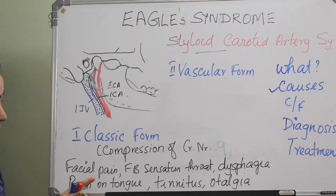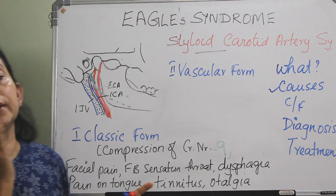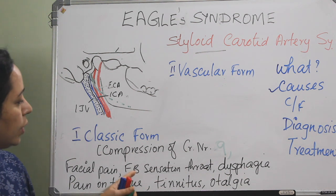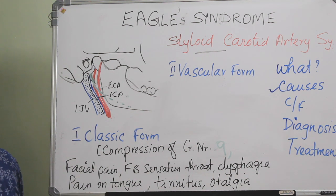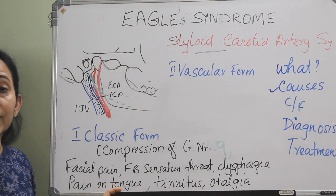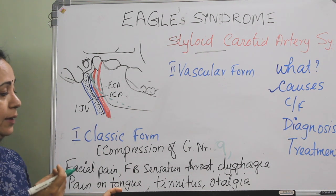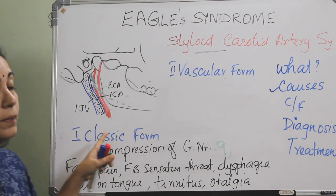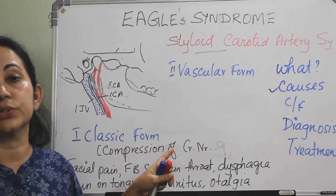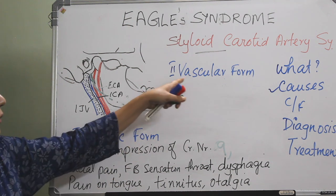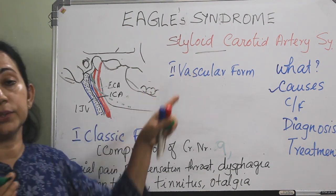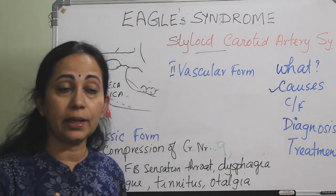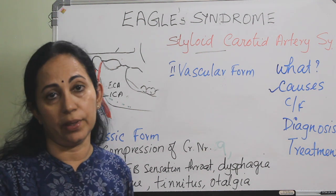In the classic form, there will be facial pain especially on turning the head towards that side, or a foreign body sensation in the throat, dysphagia, pain on extending the tongue, tinnitus, or otalgia. These are the clinical features of the classic form. In the vascular form, we can further divide it into compression on the carotid artery and compression on the jugular vein.